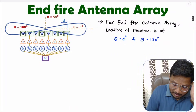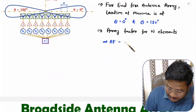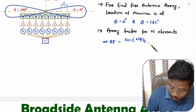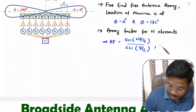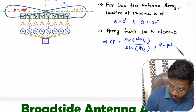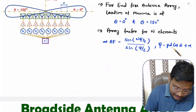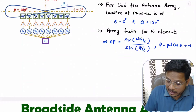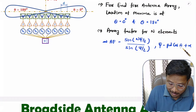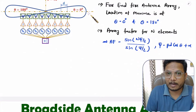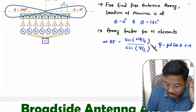Based on the array factor equation, let us identify the parameters of end-fire array. The array factor for N elements is sine of (N·ψ/2) divided by sine of (ψ/2), where ψ equals β·d·cos(θ) plus α. Here, d is the spacing between two elements, α is the initial phase of the second element with respect to the first element, and theta is the direction of radiation for maxima.